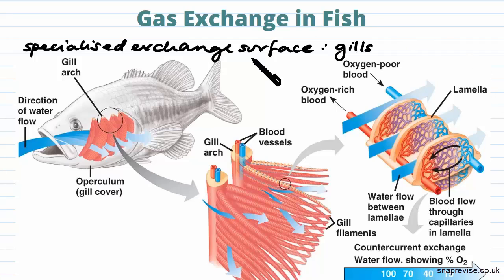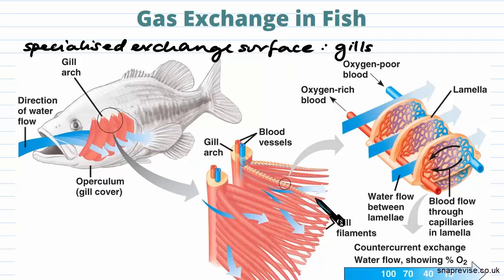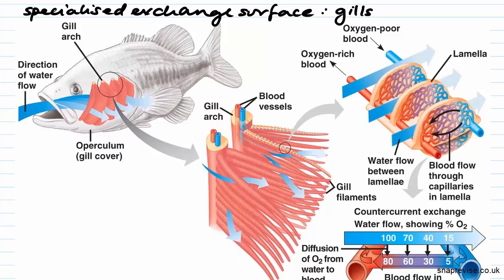Fish are relatively large, so they also have quite a small surface area to volume ratio, meaning their body surface isn't adequate enough to supply and remove their respiratory gases. So they have to have a specialized exchange surface, and these exchange surfaces are in their gills, located just behind the head.